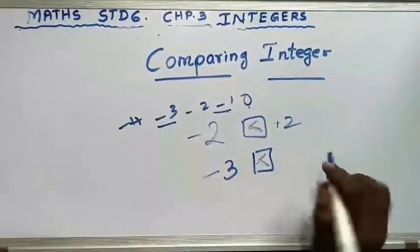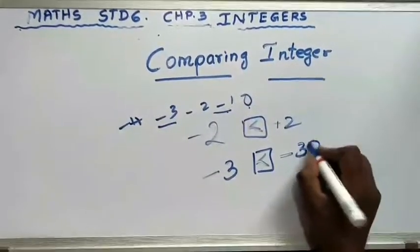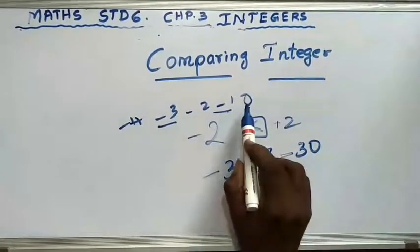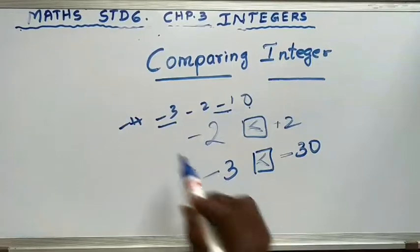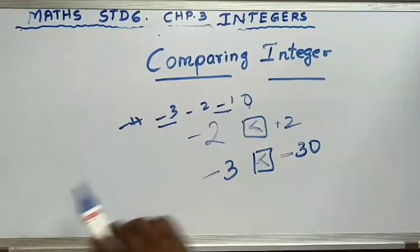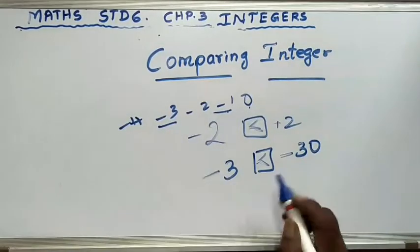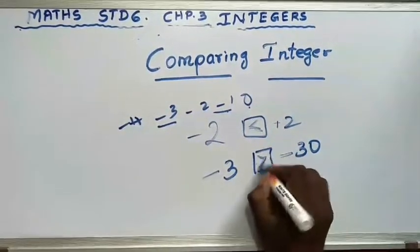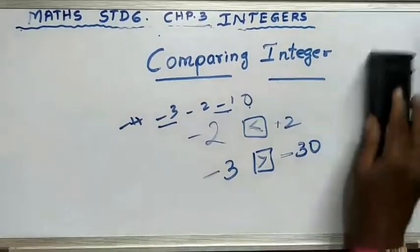If I put minus 30 here and compare with minus 3, which is greater? Count from 0: minus 1, minus 2, minus 3 — minus 3 comes first. Then minus 4, minus 5, all the way to minus 30 comes much later. So which one is first? Minus 3 is first, so minus 3 is greater than minus 30. This is comparing integers.